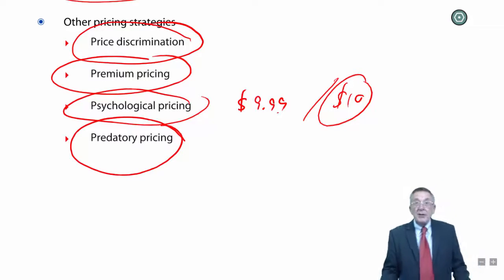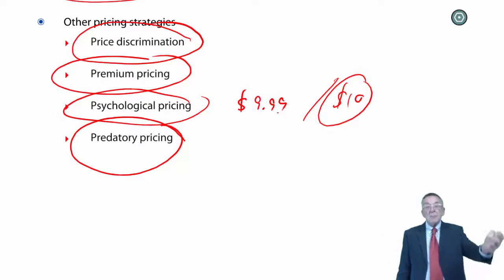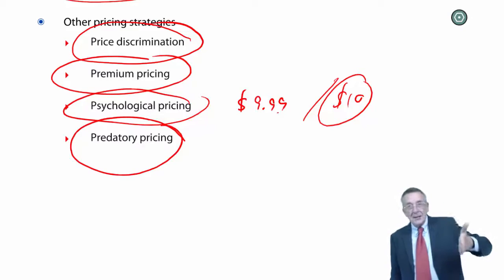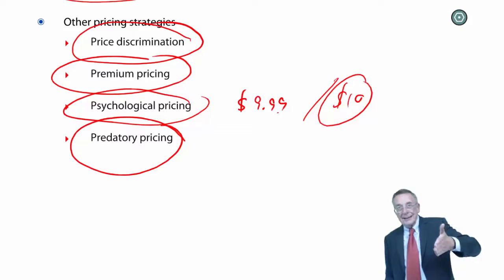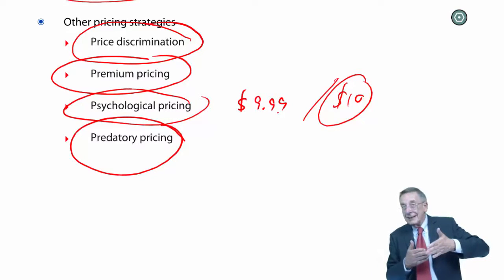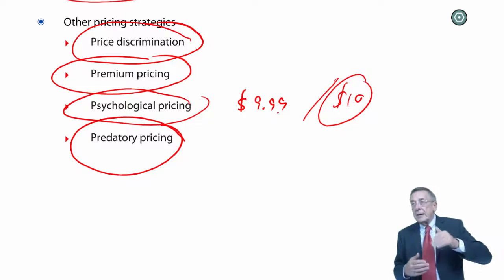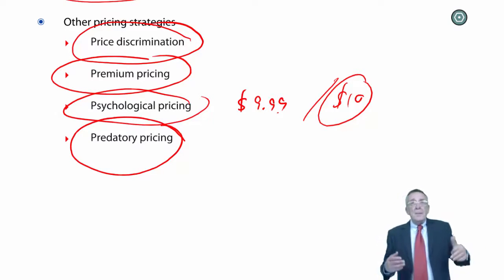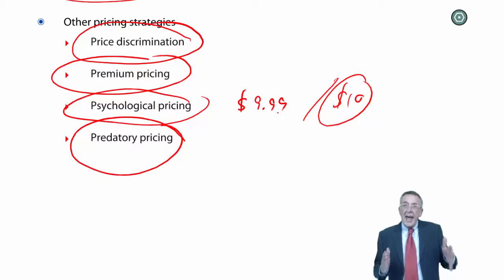Finally, predatory pricing, which in most countries is actually against the law, isn't always the easiest thing to prove. It's where you deliberately undercut the competition in order to put competitors out of business. One example a long time ago, in the UK, British Airways, well, it used to be the only real big airline in the UK.